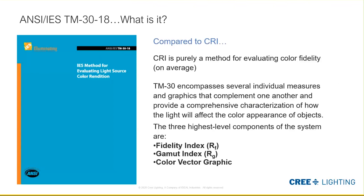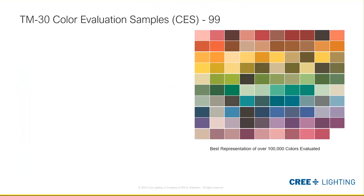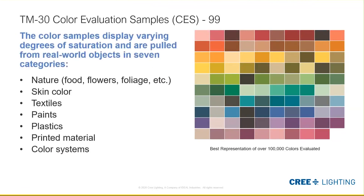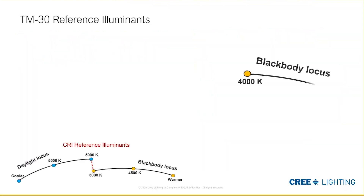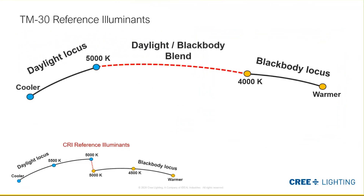TM30 introduces a fidelity index R_f, which is very similar to CRI, along with a gamut index R_g — a measure of how saturated or unsaturated the source is compared to the reference illuminant — and a color vector graphic that we'll go into in more detail in session two. The first major difference is we have 99 test samples instead of eight, representing a best sample of about 100,000 real-world measured samples across seven very common categories. TM30 also fixes the disconnect between reference sources, using an interpolation that connects the daylight locus and black body locus between 4,000 and 5,000K, giving us three references instead of two.